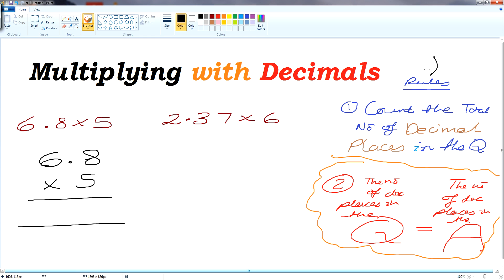Now, if you look over here, it says the rules count the total number of decimal places in the question. So if we count the total number of decimal places in the question, I have one. One decimal place in my question because there's no decimal places here.